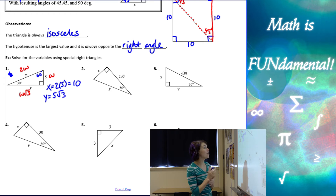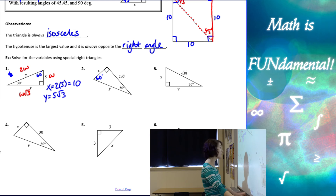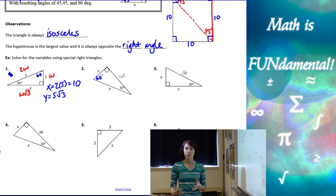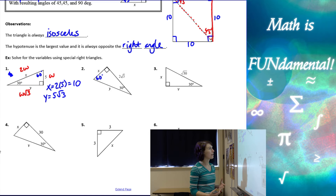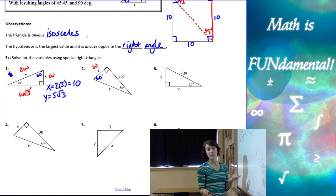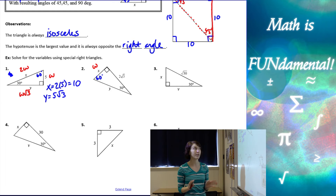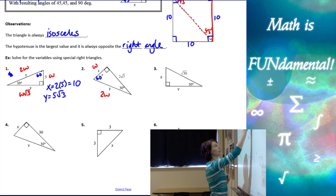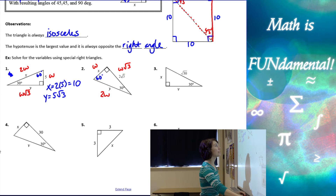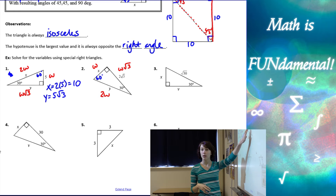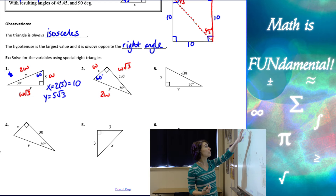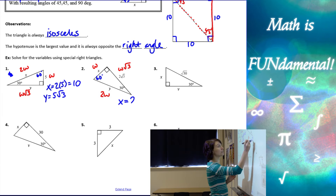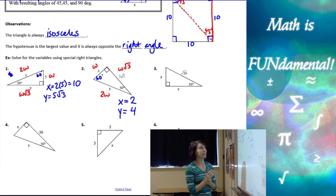Number 2 is another 30-60-90 triangle. Next to 60 is w, the hypotenuse is 2w, and the other leg is w root 3. We know that 2 root 3 corresponds to w root 3, which means w has to equal 2. So x is going to be 2, and y is 2 times 2, which is 4. When you get used to these patterns, the problems go pretty quickly.